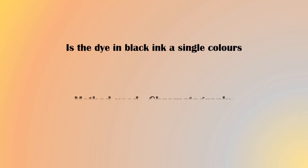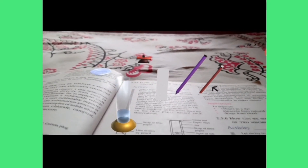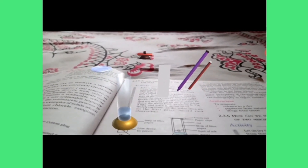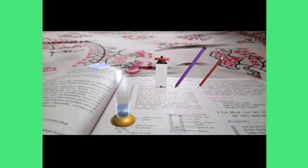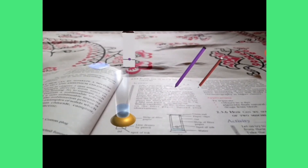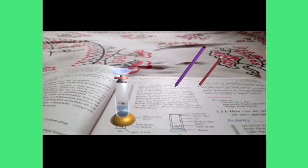Next, is the dye in black ink a single color? To find the answer, we use the chromatographic technique to separate its components. A pencil line is drawn on white paper, and then a pen is dipped into a jar of water.